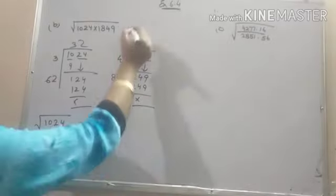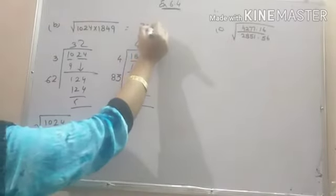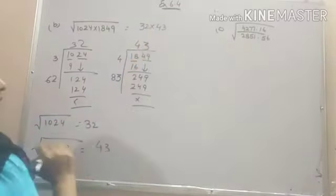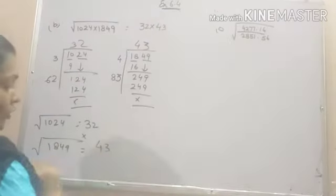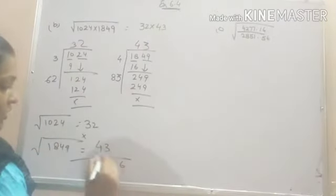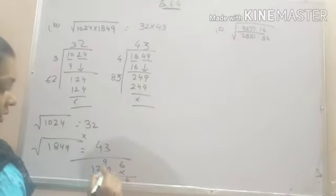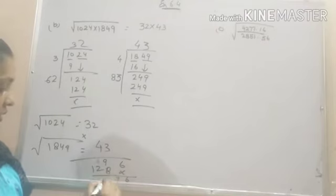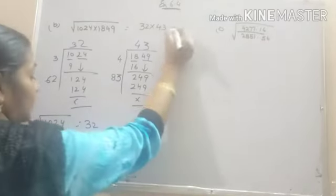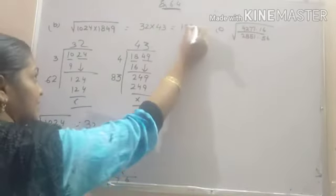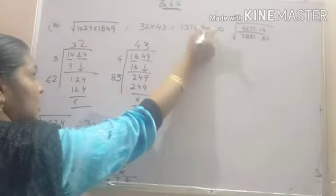What is the next step? You have to just multiply these two numbers. 32 into 43. Do the multiplication 3 times 2 are 6, 3 times 3 are 9, 4 times 2 are 8, 4 times 3 are 12. 6, 8, 6, 7, 7. You get 1376 as your answer.